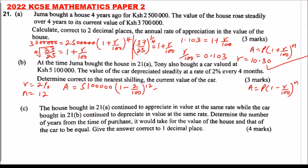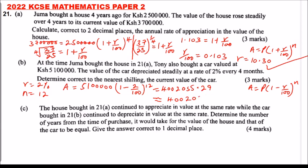Using your calculator, you find it is 4,002,055.29. Because we are told to write correct to the nearest shilling, and 0.29 is less than 0.50, we round down and say the current value is approximately 4,002,055 Kenyan shillings.